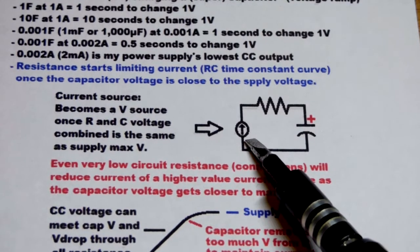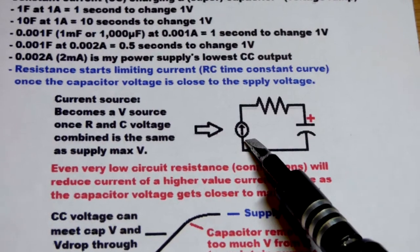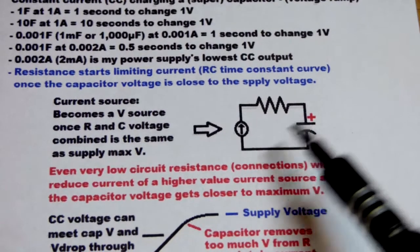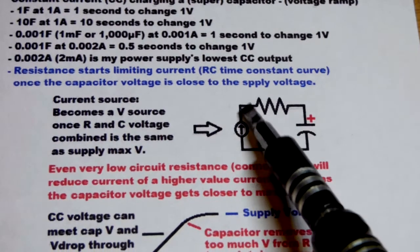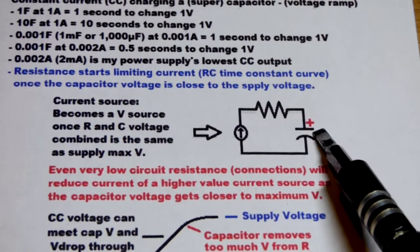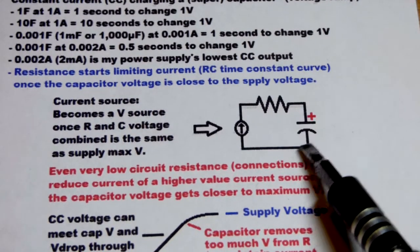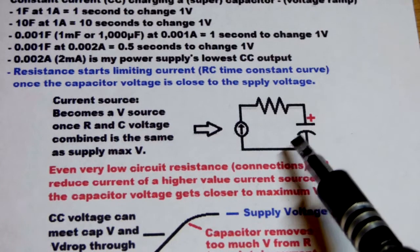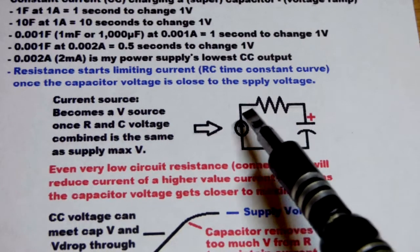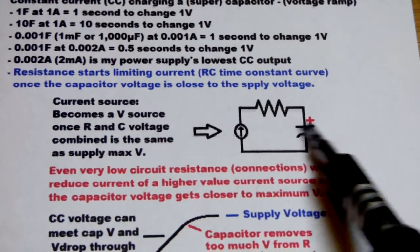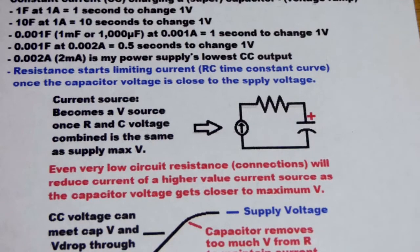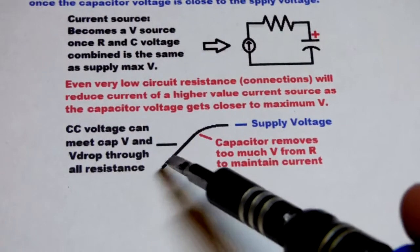We looked at how current started going down, even with the supercapacitor, when we had the power supply set to output a certain amount of current directly to the capacitor. That's because the wires and even the capacitor has a little bit of actual resistance. When you're trying to do a high amount of current, even a very small amount of resistance will start affecting it at some point when the voltage of the power supply and capacitor are pretty close to each other. That leaves less voltage for the rest of the circuitry to allow a lot of current to go through.